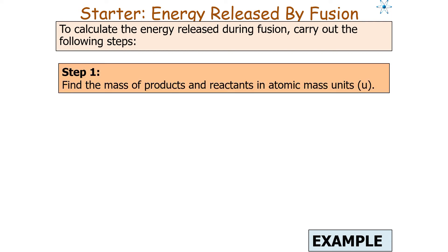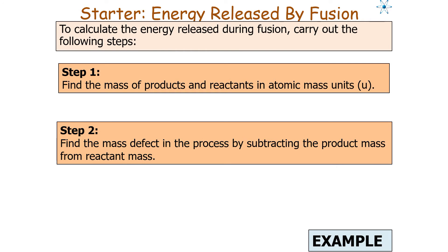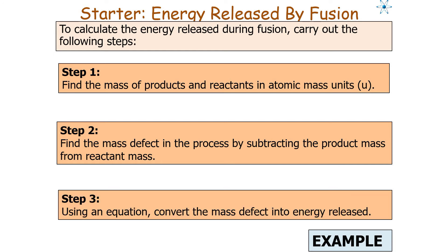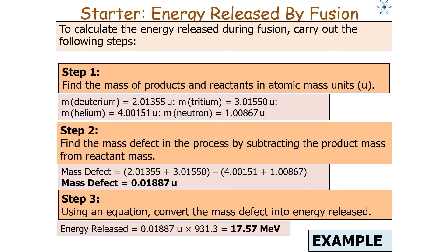We should also be able to calculate the energy released during fusion by carrying out the following steps. Step 1: find the mass of the products and reactants in atomic mass units. Step 2: find the mass defect by subtracting the product mass from the reactant mass. Step 3: convert the mass defect into energy released. You can work out the energy in MeV by multiplying by 931.3, and then convert to joules if needed.